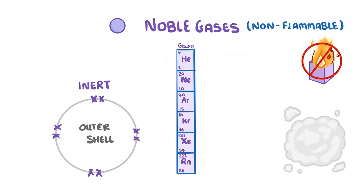The only other thing that you really need to know is that their boiling point increases as you go down the group, just like it does for the halogens.